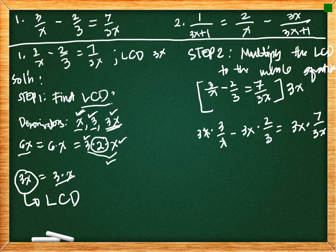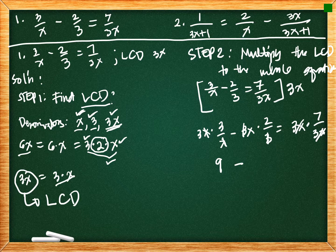Then we cancel out common factors. Cancelling gives us 3 times 3, which is 9, minus 2 times x, which is 2x, equal to 7. So now we are ready to move to step 3.